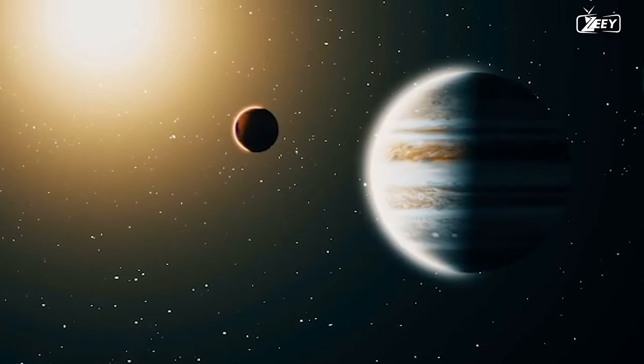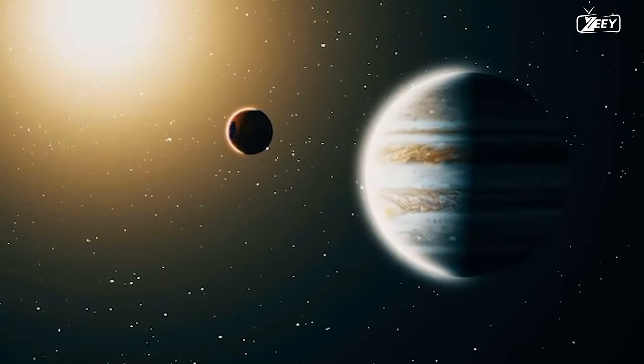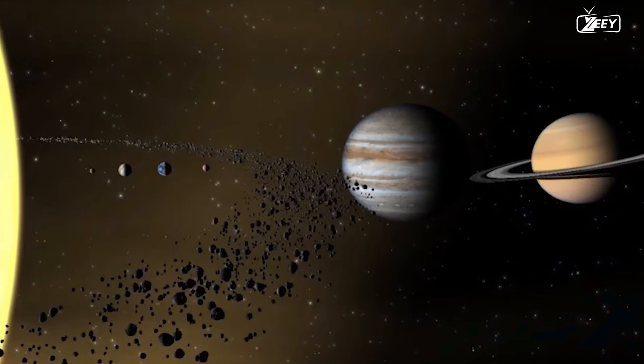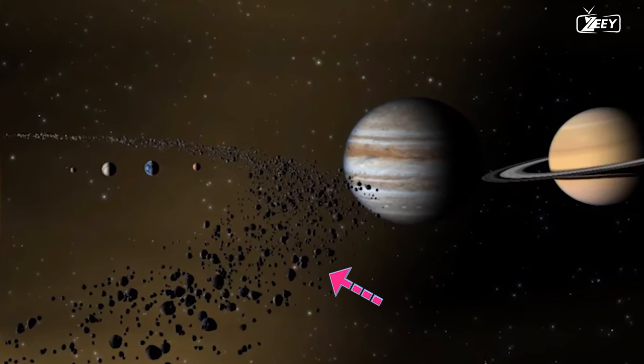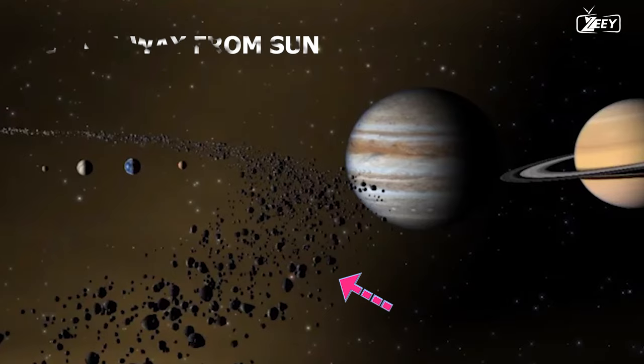Nonetheless, it is typically located in the region between Mars and Jupiter, also known as the asteroid belt. In the inner solar system, the snow line is approximately five astronomical units away from the sun.